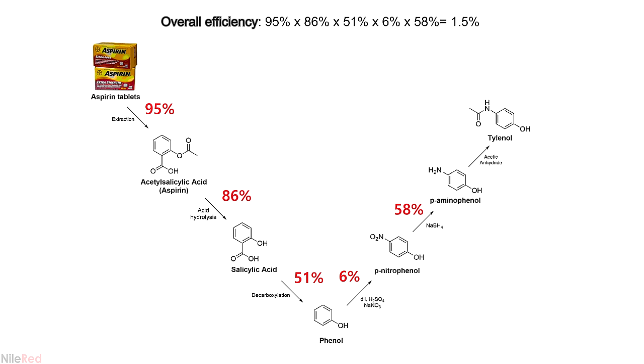To calculate the overall efficiency I multiply out the percent yield from each step and so far I'm at a killer 1.5%. I'm really hoping I get a decent yield in the next one because I don't want to drop below 1%. With that being said the next video is going to be the last one in the series and I hope to upload it within the next week.